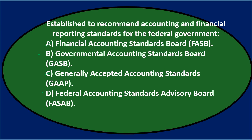Between B and D: because the question specifically asks about the federal government, the answer is the FASAB — the Federal Accounting Standards Advisory Board. Final answer: D — established to recommend accounting and financial reporting standards for the federal government, the Federal Accounting Standards Advisory Board, FASAB.